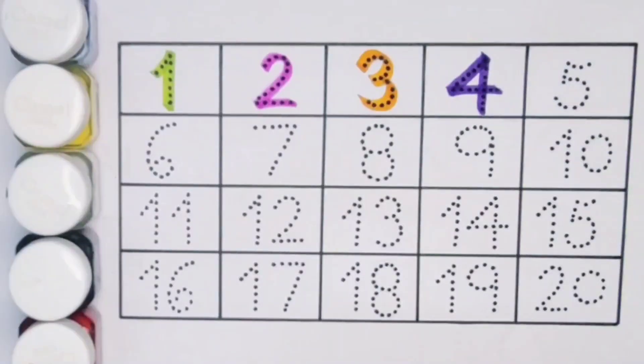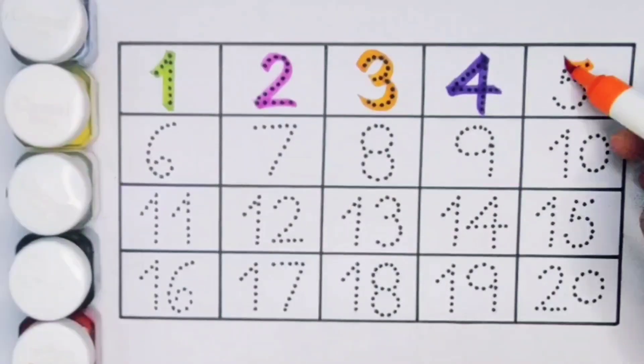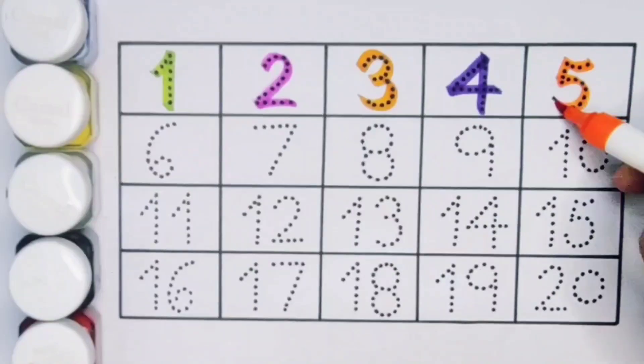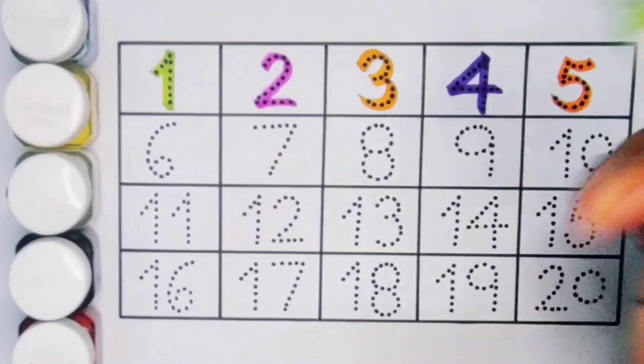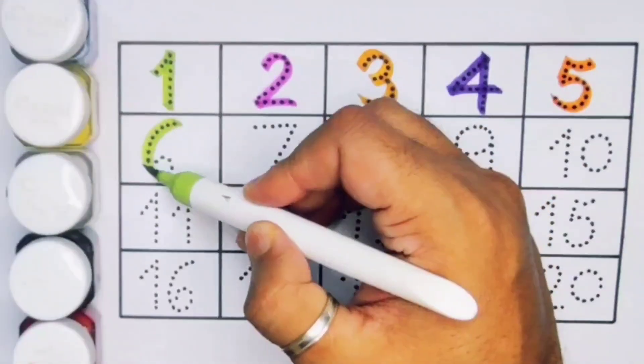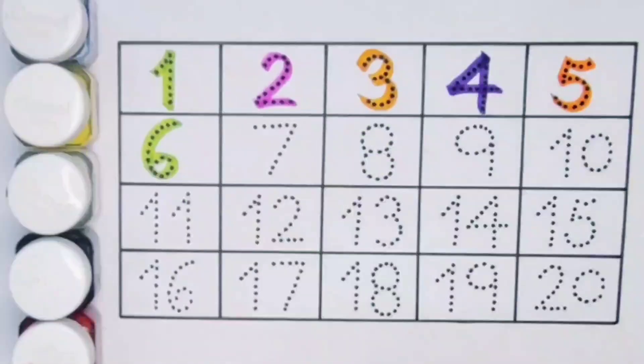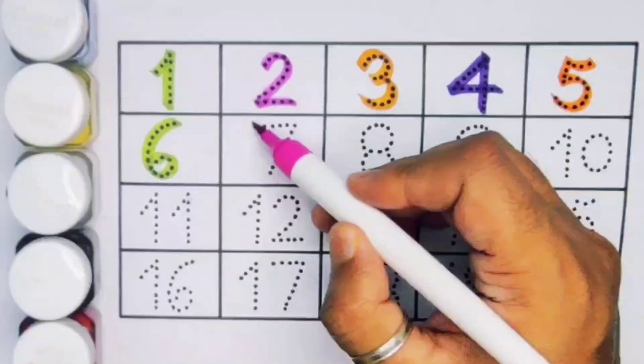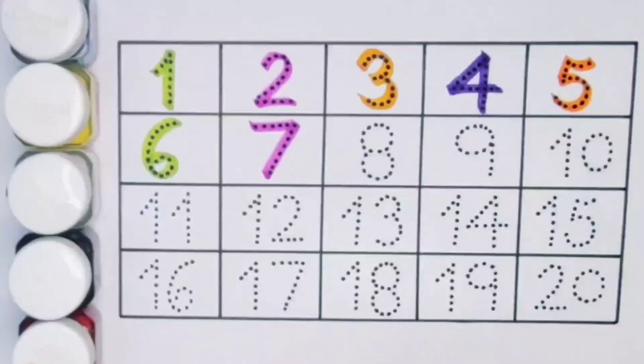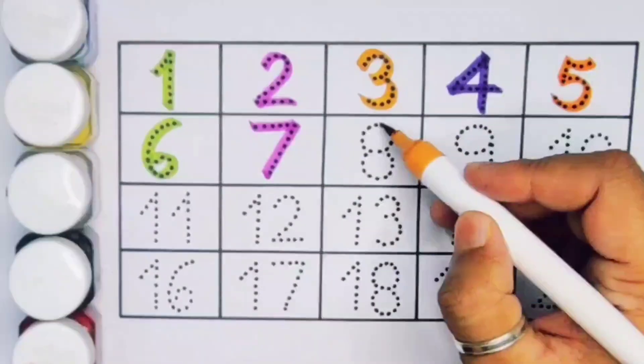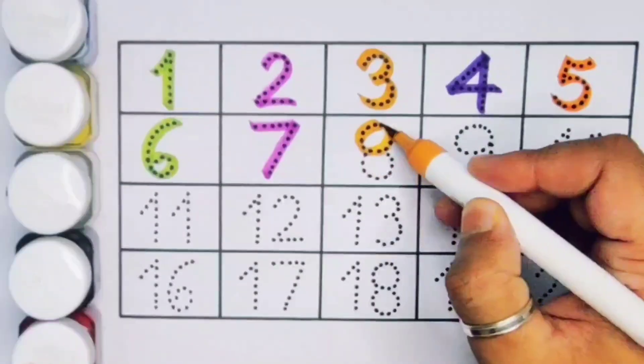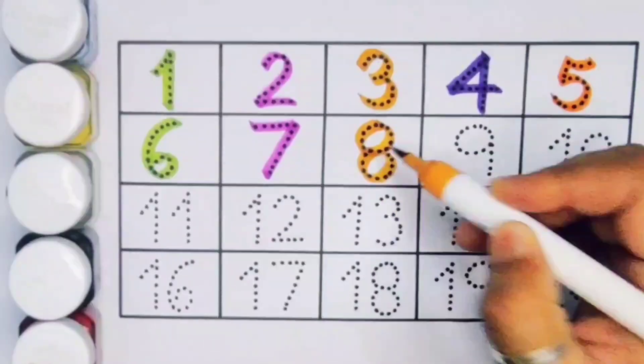Next kids, five, number five. Next kids, six, number six. Next kids, seven, number seven. Next, eight, number eight.